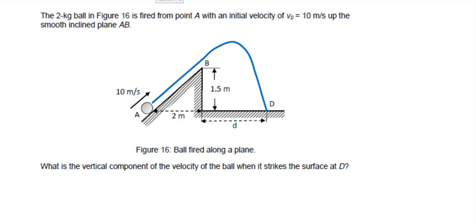Hi everyone, this question needs a bit more attention on the exam. We have a ball, we fire the ball with 10 meters per second, so that's the initial velocity at an angle of theta. And we want to find out what is the vertical component of the velocity of the ball when it strikes the surface at D.